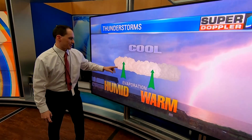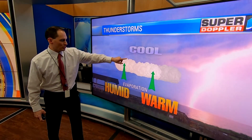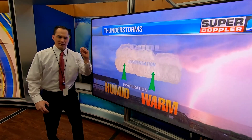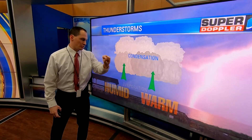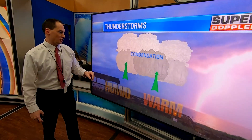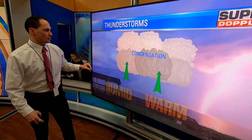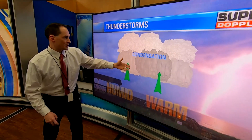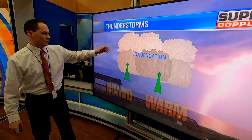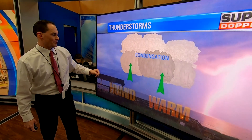It goes up higher in the sky, it rises, and then when it rises, it cools, and then you get little tiny liquid particles to form up higher in the sky — that's condensation. You get billions of those particles to form and it makes clouds. These clouds build and get taller and taller and become a cumulonimbus cloud, or a thunderstorm cloud.